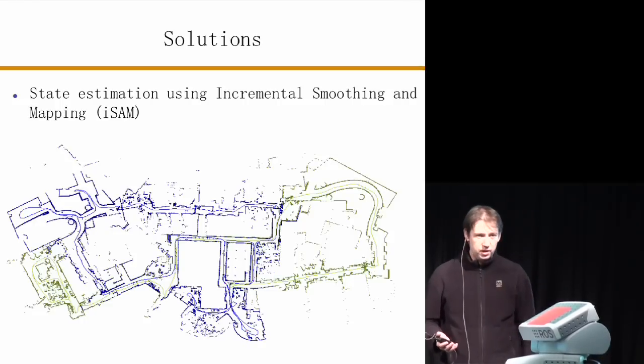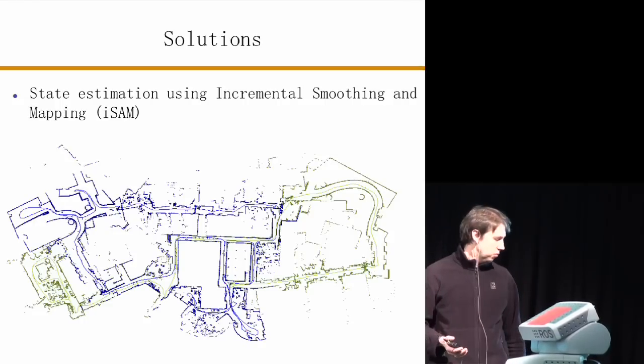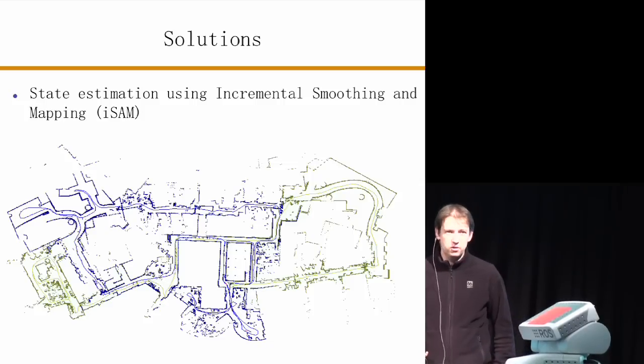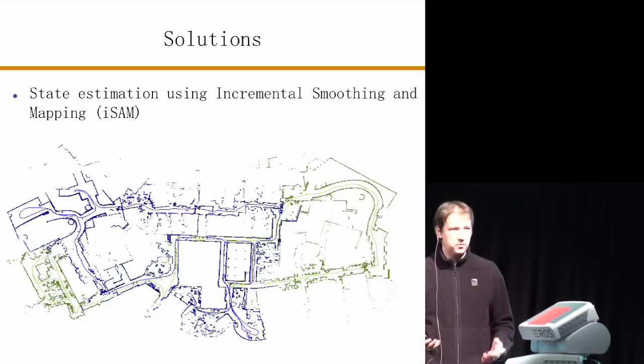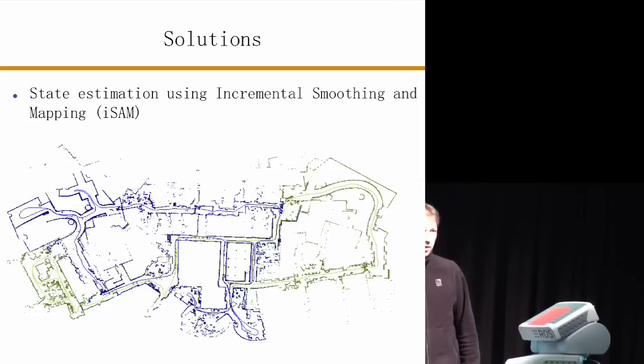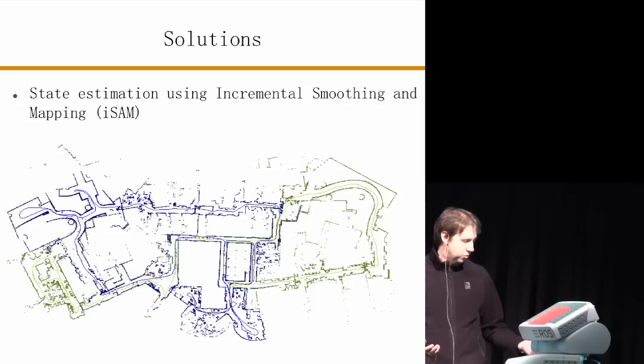Some of the solutions we wanted to bring to the PR2 is one of my projects in our group has developed a software called incremental smoothing and mapping. That's the solution we have used to maintain an estimate of the world, a state estimate of the world.